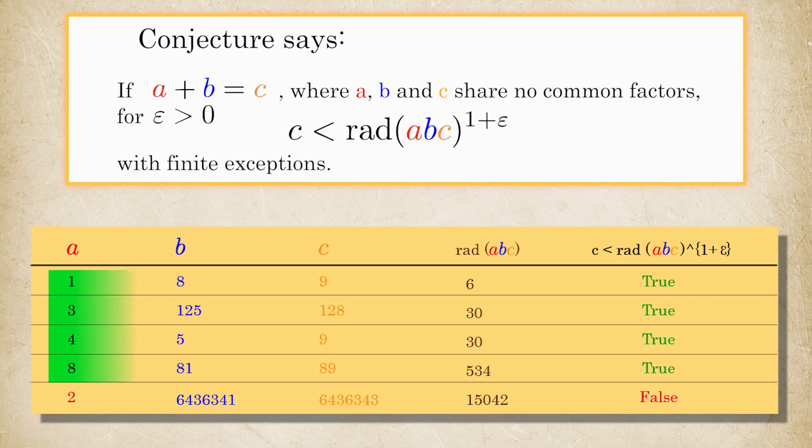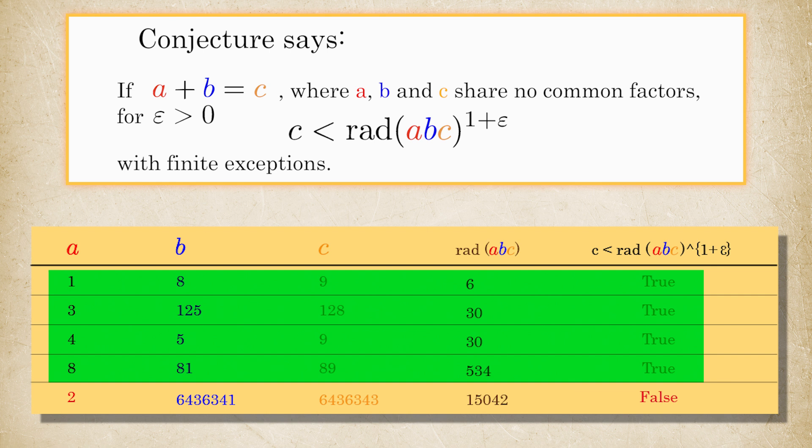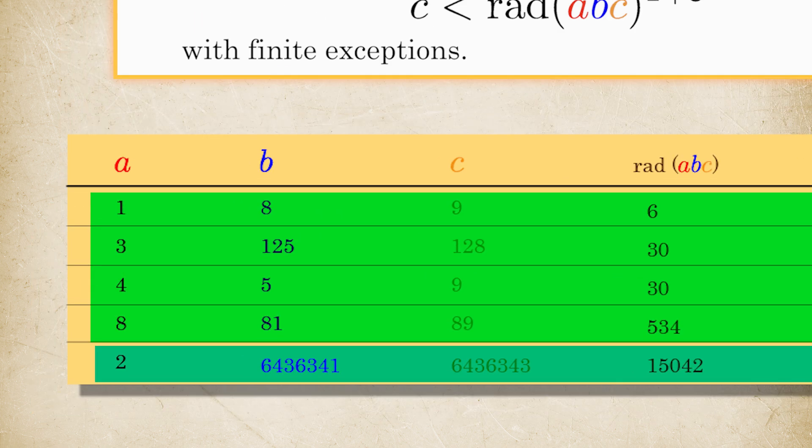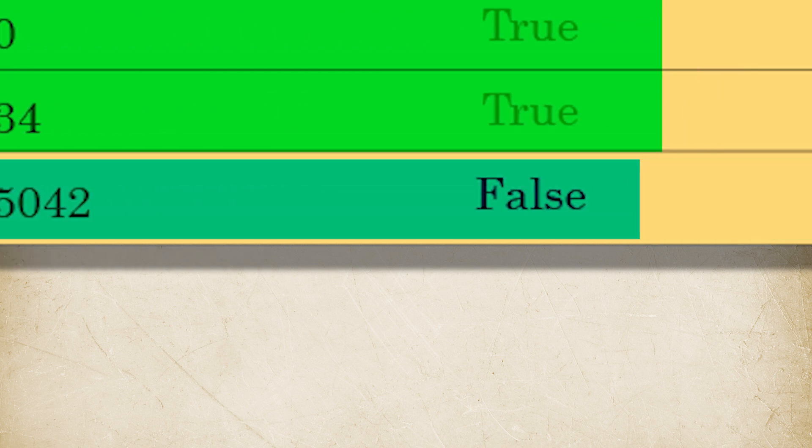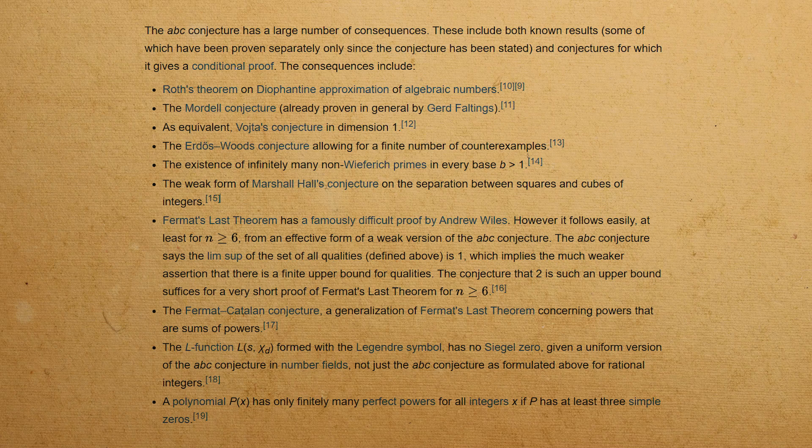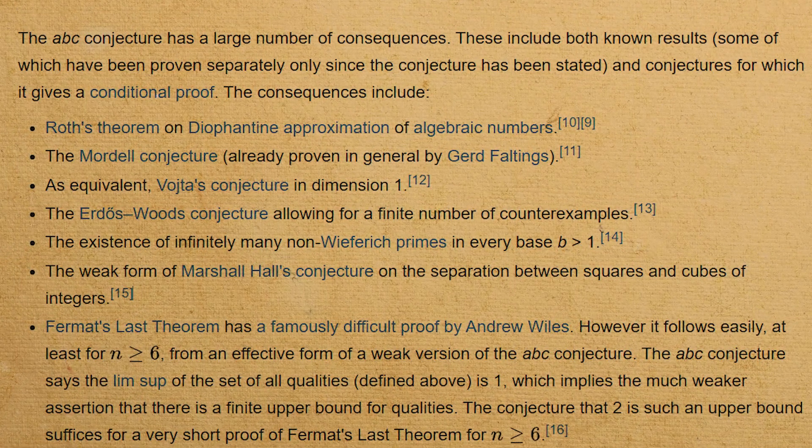In our previous table, except for the last row, all cases have a radical greater than C for epsilon 0.5. In fact, the last row is the largest known exception so far. They're called Reisat triplets, found by Eric Reisat. The ABC conjecture has a large number of consequences.